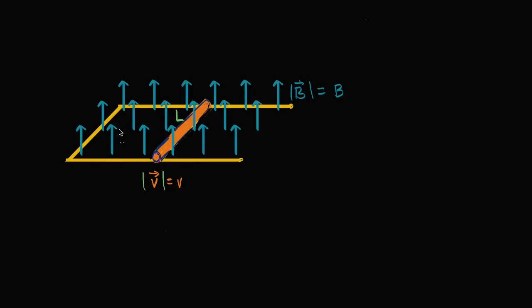I have an interesting setup over here. I have a magnetic field that is constant and it's going straight out of the surface of this loop. The magnitude of the magnetic field at any point of the surface is going to be B. This right part of the loop is movable — you can imagine it's a cylinder that can roll to the right. The magnitude of its velocity is lowercase v, and this cylinder has length l.